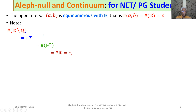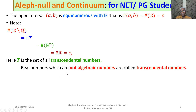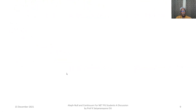So R minus Q (the set of all irrational numbers) is a non-denumerable, uncountable set. T is uncountable, R^N is uncountable, and R is uncountable — they all have the same cardinality C. Here T is the set of all transcendental numbers. Transcendental numbers are real numbers which are not algebraic numbers.